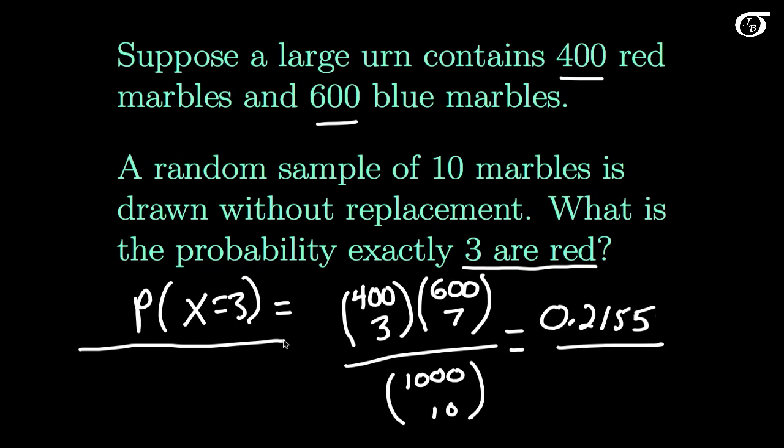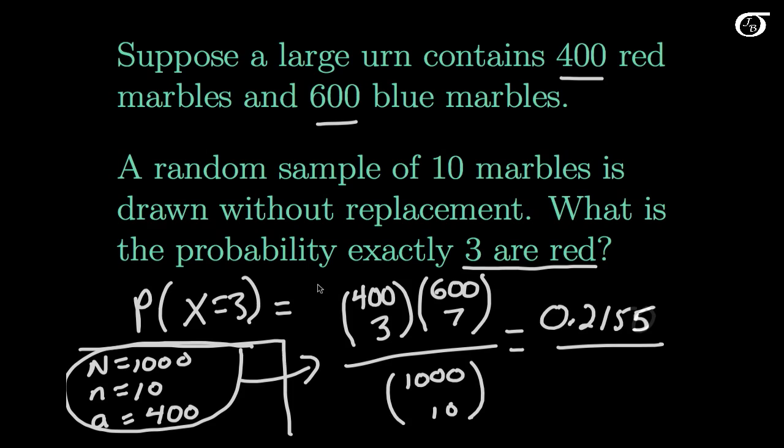And if you must use the formula here, then N represents a total number of objects, which is 1,000. Little n represents the number we are sampling, which is 10. A is the number of successes, which is the 400 red marbles. And if we put all of these into the formula from the last page, it would simply be what we have over here. But most people find it easier to just think through it logically, and then it makes more sense as well.